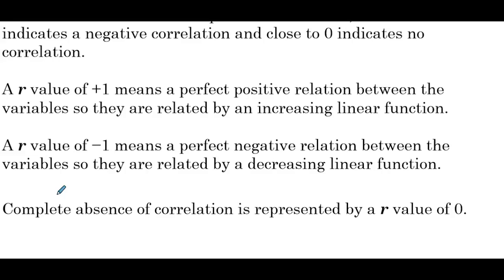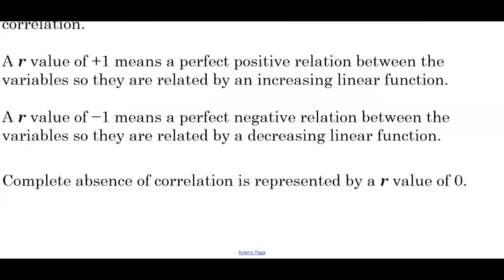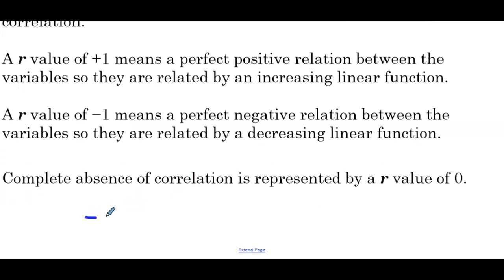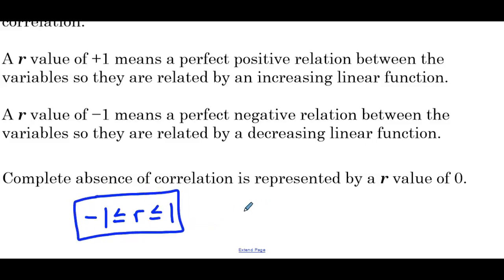It's important to point out that if positive 1 is a perfect positive relation and negative 1 is a perfect negative relation, then we can't get any values higher than 1 or less than negative 1. So r is going to be some value between negative 1 and 1 — this is an important idea when we're talking about the correlation coefficient.